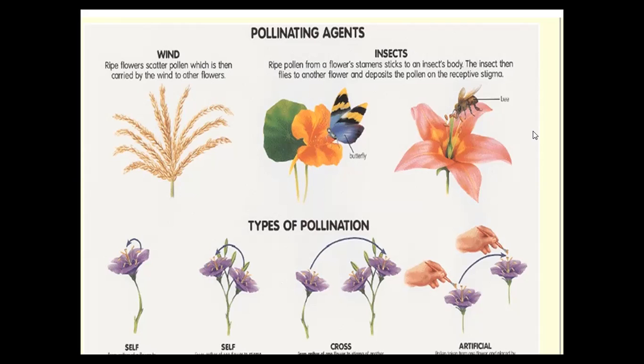Cross-pollination is when pollen grains from the anther of one flower are transferred to the stigma of a different flower. That is cross-pollination.